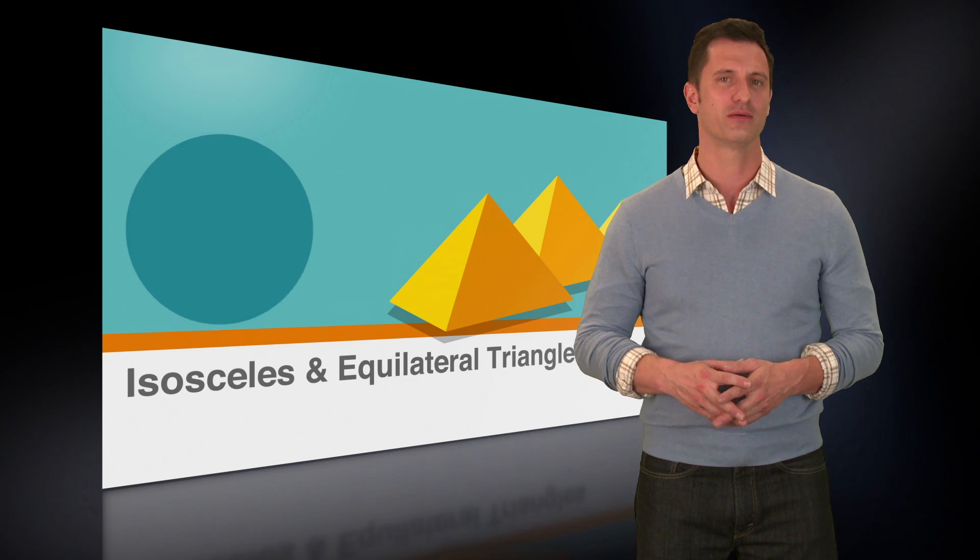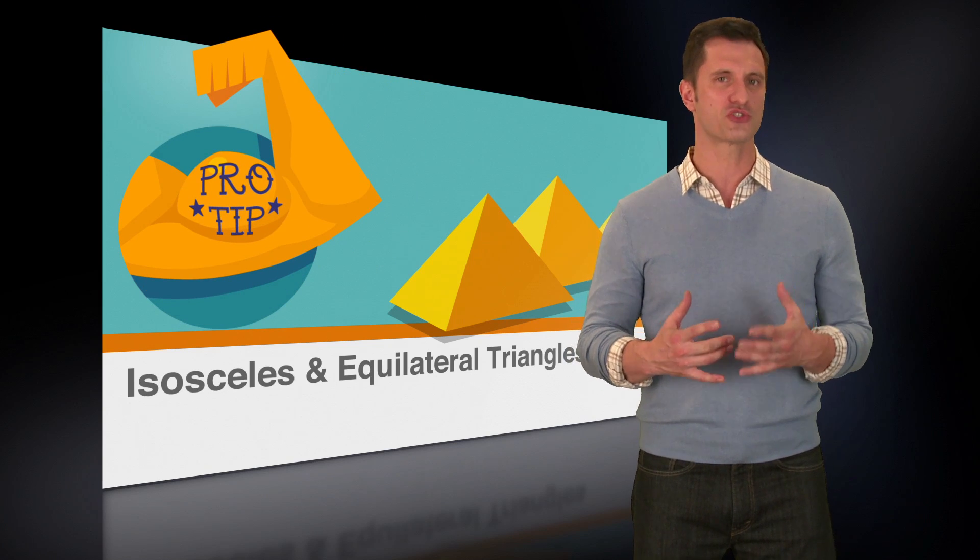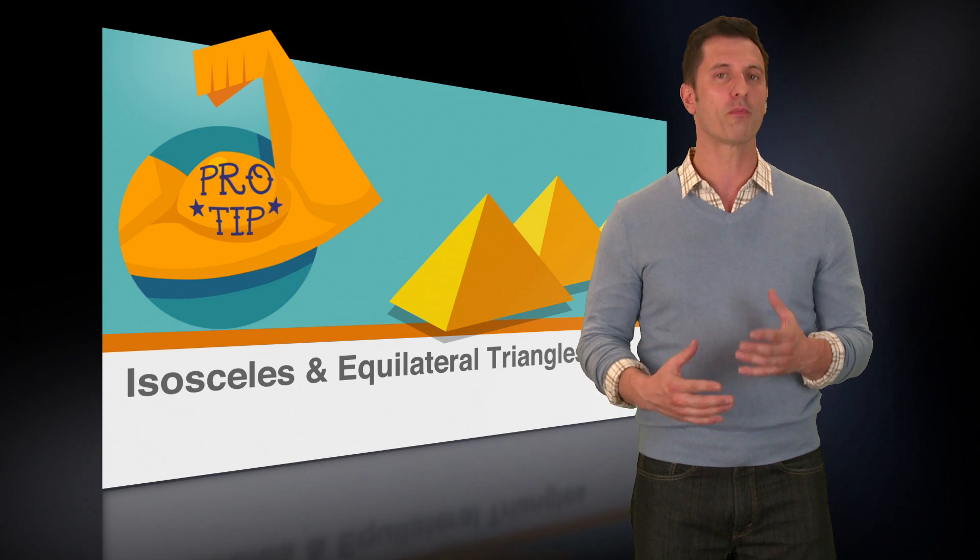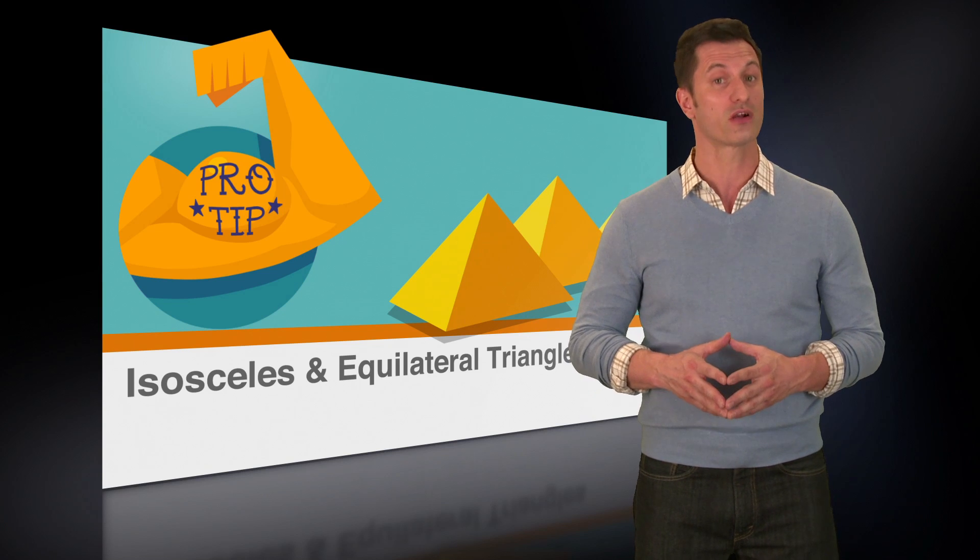We went over a typical ACT problem where the isosceles triangle was given to us in the question. But here's a pro tip: you should also be on the lookout for isosceles triangles in circles. They won't be labeled as isosceles, nor will you usually be told that the two sides of the triangle are equal.